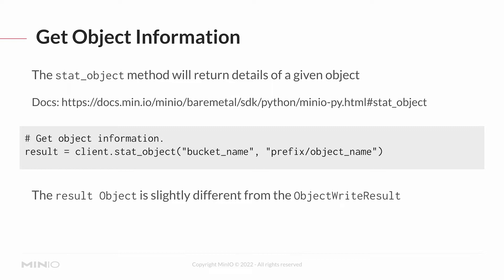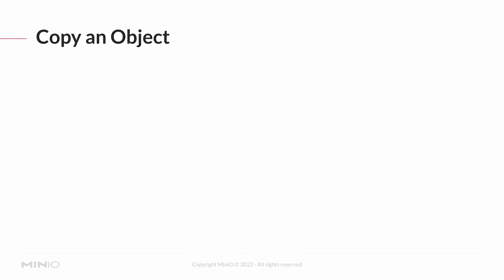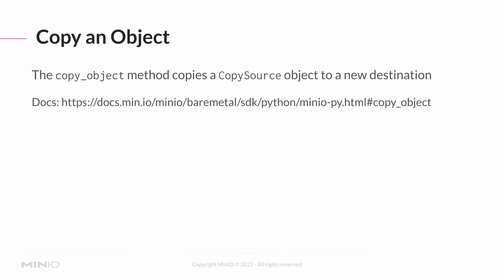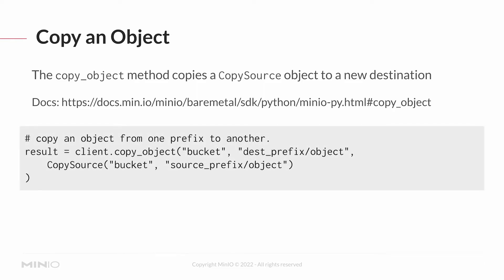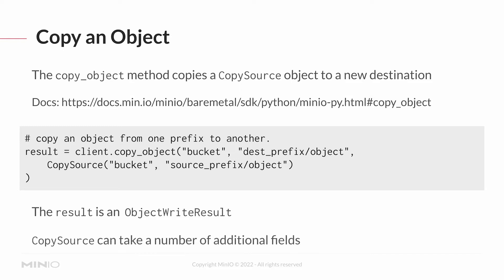A little more interesting is copying an object. The copy_object method uses a CopySource object to take an object and copy it into a new destination. When doing a copy, you need to give it the bucket, a destination prefix, and an object name. The CopySource also gets a bucket and a source object. The result is an object write result, just like anything else. The main difference between source and destination will be the source prefix and the destination prefix.